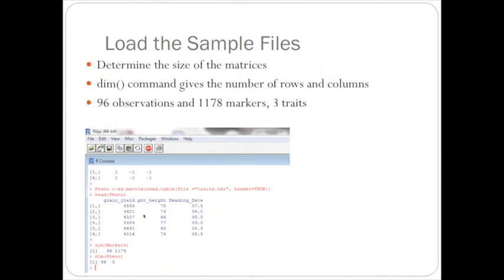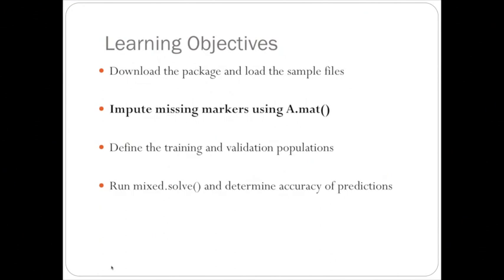So, to also make sure that the sample files have been loaded in correctly, we can determine the size of the matrices. So, I did that with the dim command. And to do dim markers, this shows 96 individuals, which was 96 observations that we had for the phenotypes and the markers, and then 1,178 markers. So, this is 96 rows and 1,178 columns of the markers. And then for the phenotypes, it's again 96 individuals and 3 traits. So, 3 columns for the traits. Okay, so then moving on to our next learning objective of imputing missing markers using the A.mat command.